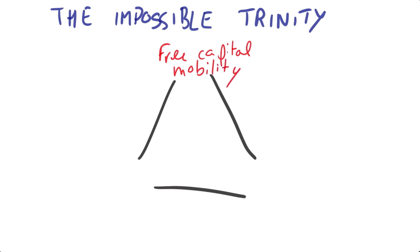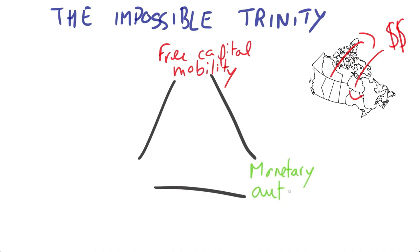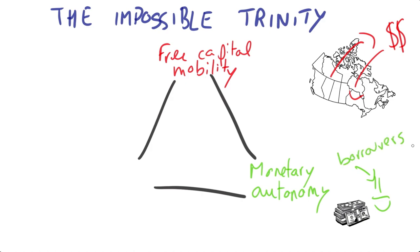The first thing that a country wants is free capital mobility, because that means that money can flow in and out of the country without too much disruption. Secondly, a country is going to want monetary autonomy — that means that they can set their own interest rate. A stable interest rate keeps borrowers happy without upsetting savers.